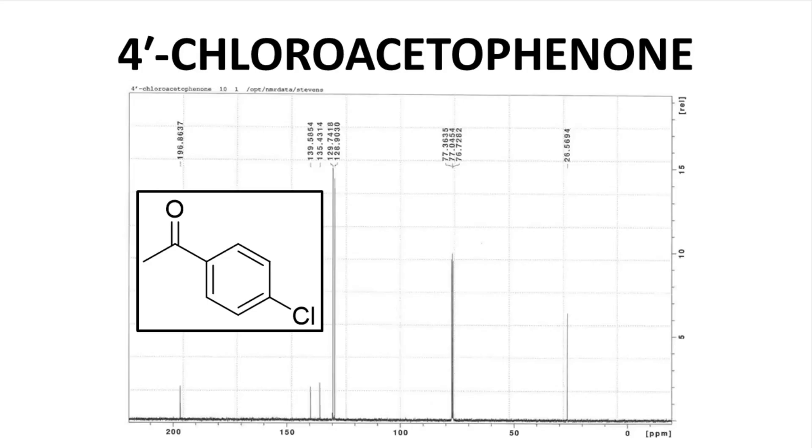Our last spectrum is 4'-chloroacetophenone. The molecule has eight carbons, but notice that our spectrum has only six peaks – six signals. 1, 2, 3, 4, 5, 6. Why don't we see 8 signals? It is because our molecule has a plane of symmetry.